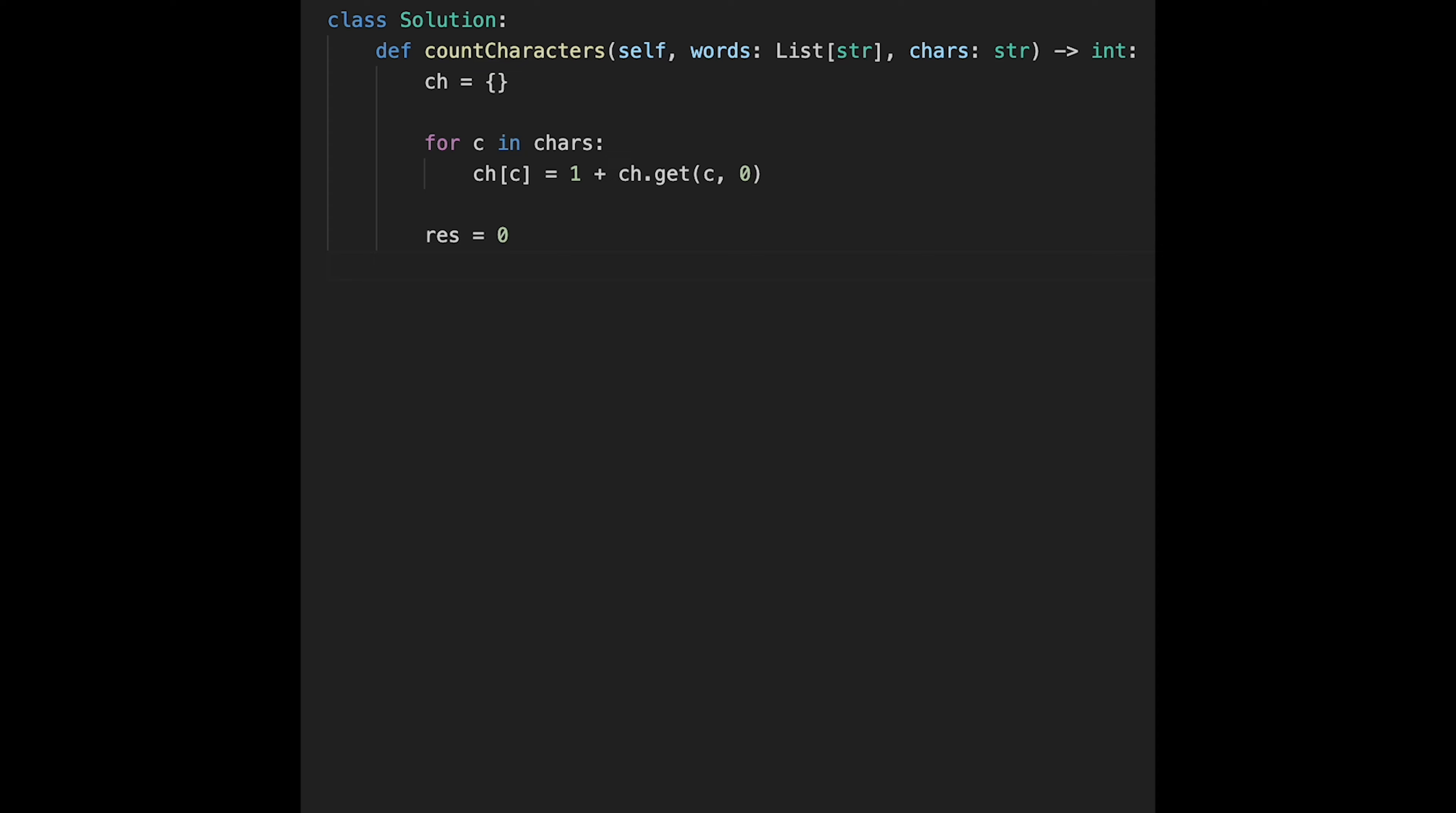Then create a result variable with 0. Let's iterate through words. For word in words. First of all, we have to copy ch.